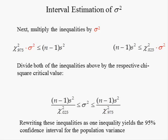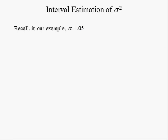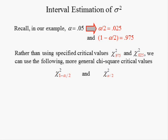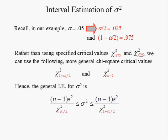It is a 95 percent confidence interval for the population variance. The confidence level was 95 percent, hence the significance level is 0.05. Since confidence intervals have two tails, we split alpha in two, which is why alpha divided by two equals 0.025 and one minus alpha divided by two equals 0.975. Rather than using specified critical values, we can use the general chi-square critical values, giving us the general interval estimate for sigma-squared, where the two chi-square critical values are based on a chi-square distribution with degrees of freedom equal to n minus one, and one minus alpha is the confidence coefficient.